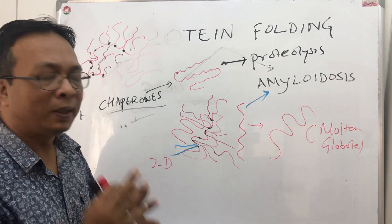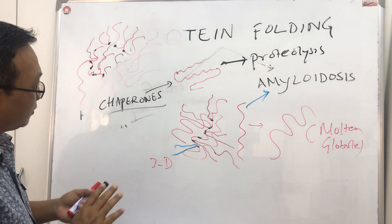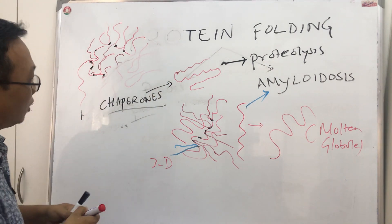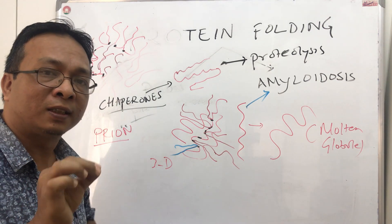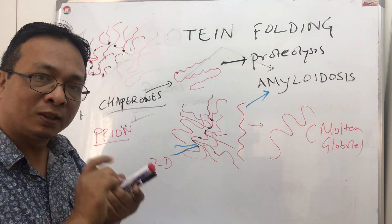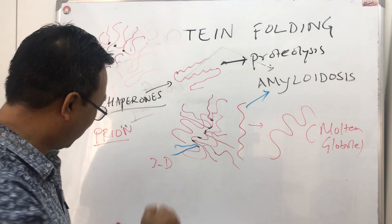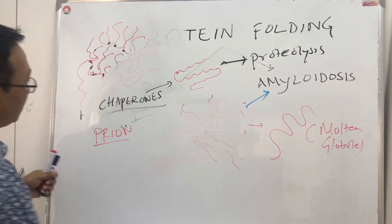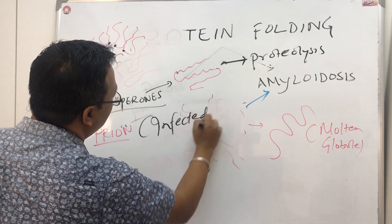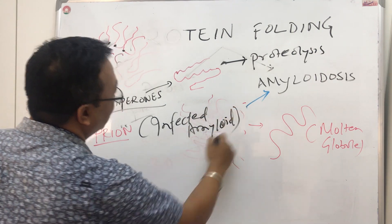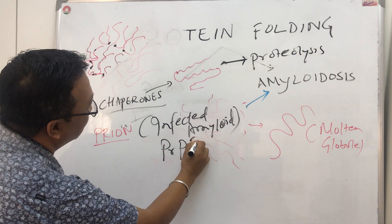Amyloidosis can occur in the brain, kidneys, and heart, causing many diseases. One key characteristic of some misfolded proteins is that they are called prions. A prion is an infective amyloid — when it interacts with a normal protein, it can also make it misfolded. It can convert normal proteins into misfolded ones.